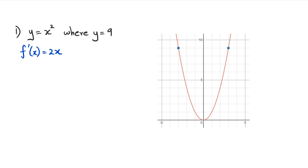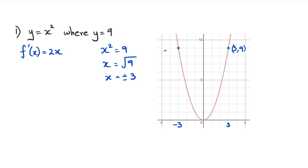The problem is that we've been given the y value, which is nine. So we need to figure out for what values of x is y equal to nine. We write x squared equals nine, so x equals the square root of nine, which is plus or minus three. As you can see, there's minus three there and plus three there, giving coordinates (3, 9) and (-3, 9). So we're actually finding two gradients, because there are two points in this case.